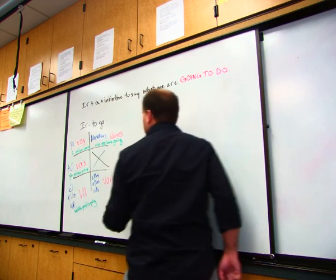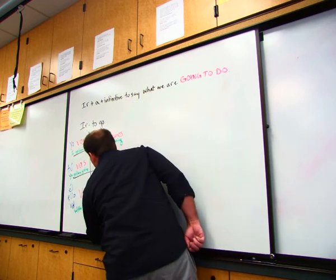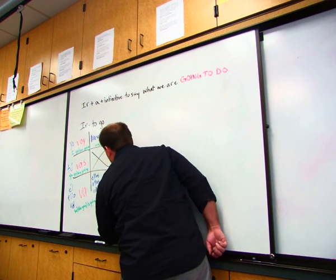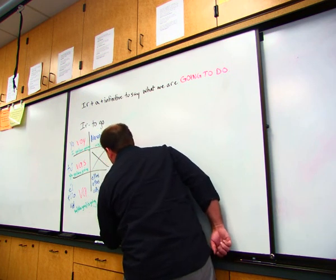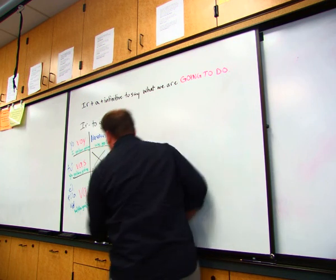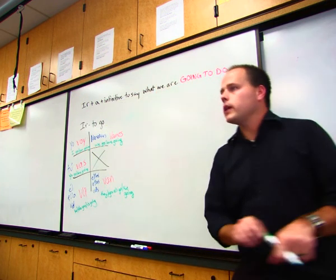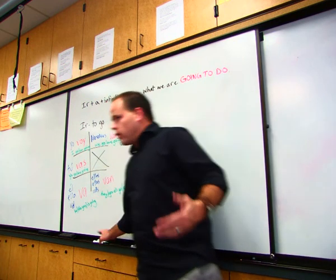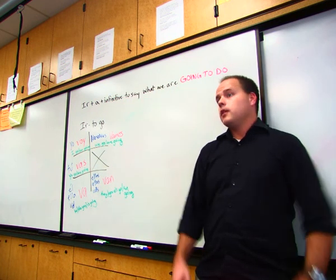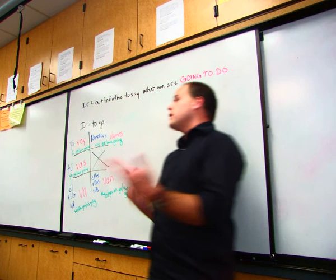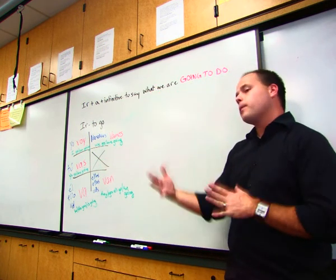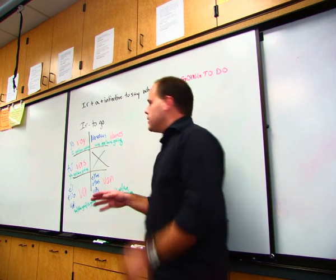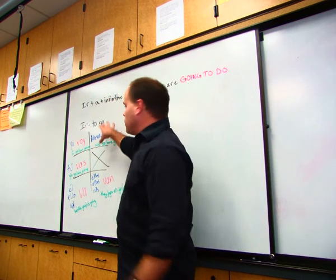And ellos, ellas, ustedes van means they or you all go, or are going. Now I put both of them there, because when we do conjugate verbs, hablo can mean I speak, but it can also be I'm speaking, depending on how it's used. So you've also got the present progressive, which we learn at the end of the year. Same thing, similar.